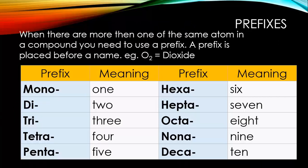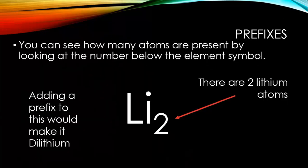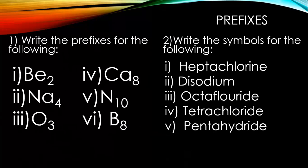Here are some prefixes. Prefixes are opposite to suffixes and come before a word. When there are more than one of the same atom in a compound, you need to use a prefix. A prefix is placed before the name, for example, dioxide for O2. You need to remember these and how many atoms each represents. Mono means one, deca means ten. You have to memorize all of those because they're important. You can see how many atoms are present by looking at the number below the symbol. Adding a prefix would make it dilithium for two lithium atoms. Have a go at some of these. BE2 is two atoms of beryllium, N10 use your prefixes. For the second activity, work out how many atoms of, say, heptachlorine there are.